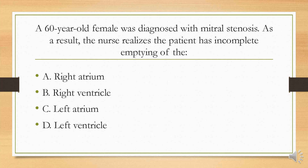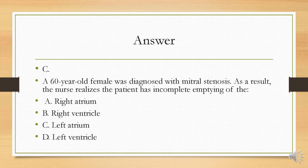A 60-year-old female was diagnosed with mitral stenosis. As a result, the nurse realizes the patient has incomplete emptying of the: A, right atrium; B, right ventricle; C, left atrium; or D, left ventricle? Your answer is C. Mitral stenosis results in incomplete emptying of the left atrium, as the mitral valve is located between the left atrium and left ventricle. On the right side of the heart, the tricuspid valve is located between the right atrium and right ventricle.